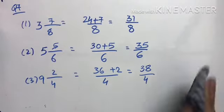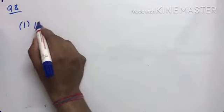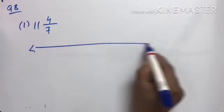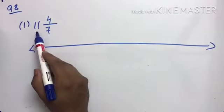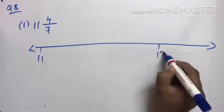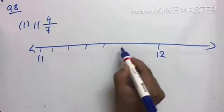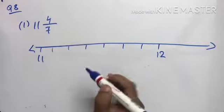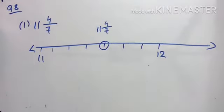Now represent the following mixed fractions on a number line. For 11 and 4/7: the whole number is 11, so the fraction lies between 11 and 12 on the number line. Divide that segment into 7 equal parts. Count to the 4th part — that is where 11 and 4/7 is placed.